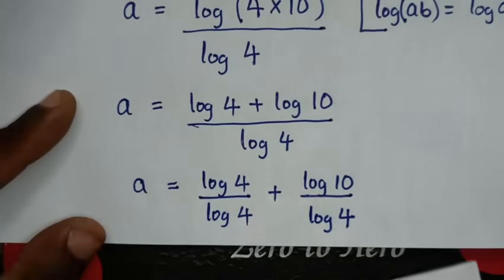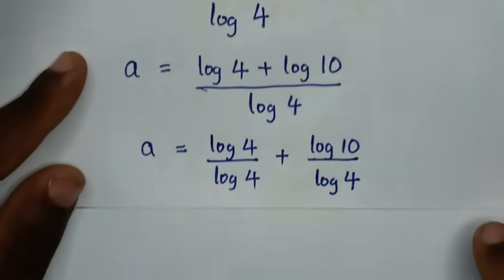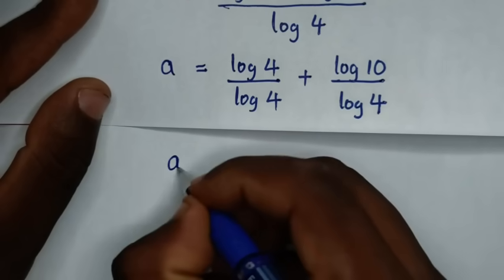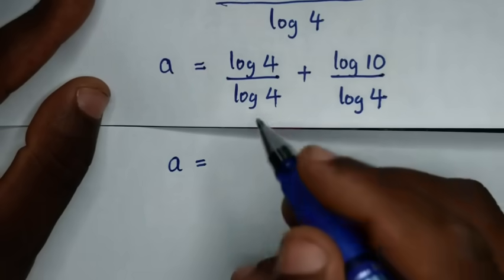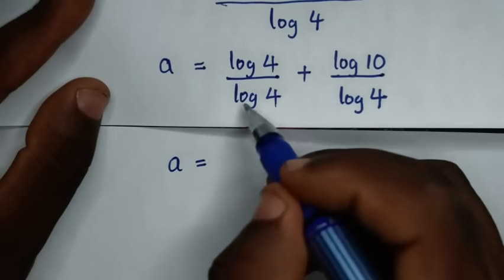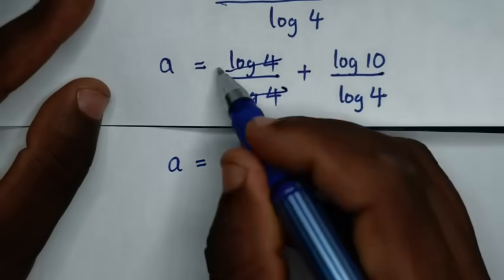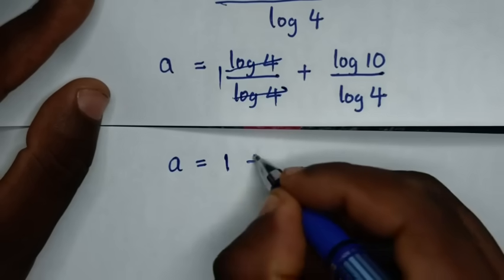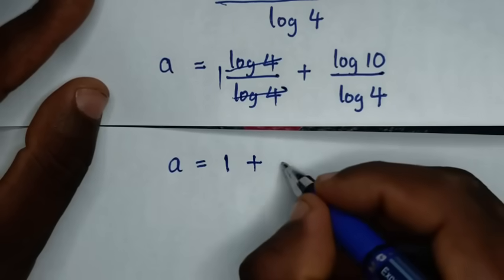Then in the next step, it will be a is equal to log of 4 divided by log of 4. This divided by this is 1. So it will be 1 plus log of 10 over log of 4.